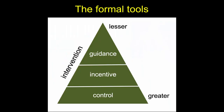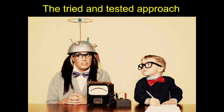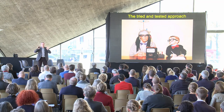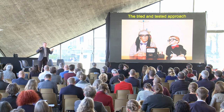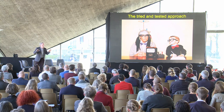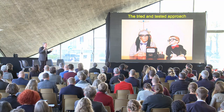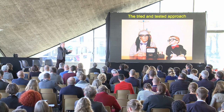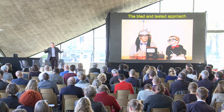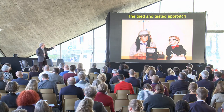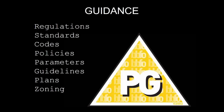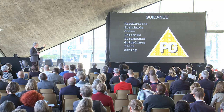Let's look at the formal tools and what we might include in that category. There are really three categories going from lesser to greater intervention. This is the tried and tested approach — wherever you are, there's always some form of regulation on the quality of places. Even places like Houston in the US, which doesn't have a zoning system, has all sorts of other ordinances to do essentially the same thing. It starts with guidance, and different places have different types. In the UK we have regulations — a building code — then there are standards, for example space standards within the home.